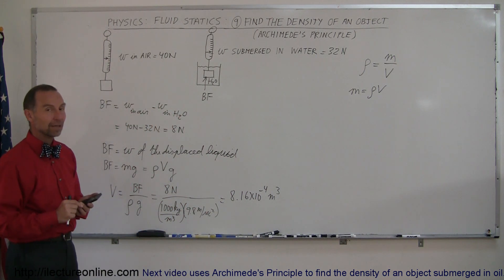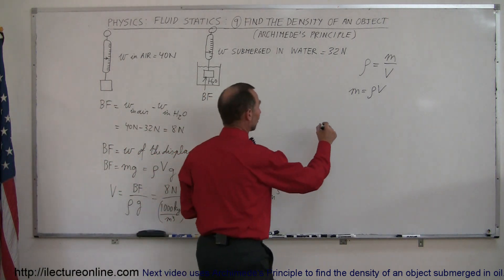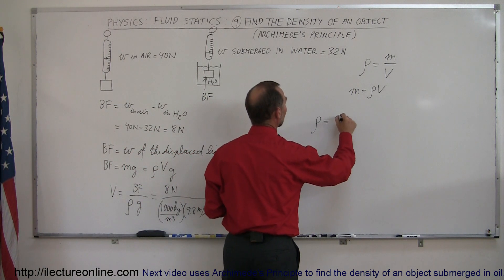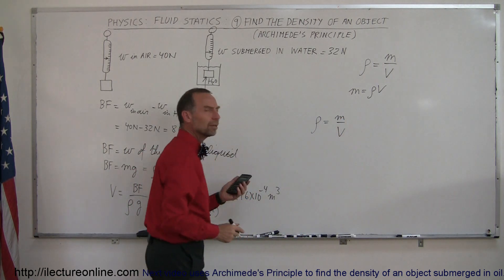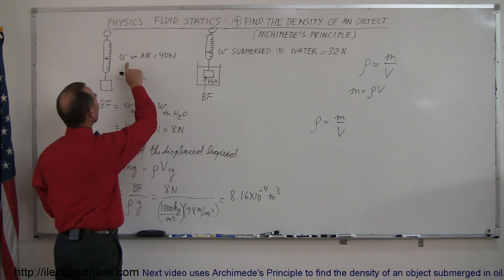Now we can go ahead and measure or calculate the density, because it says here that the density is equal to the mass divided by the volume, and the volume we now have. But what about the mass? We didn't measure the mass, we measured the weight.